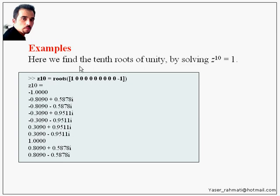Here we want to find the tenth roots of unity by solving z to the power of 10 equal 1. Type this code: z10 equal roots. This is the coefficient of this polynomial: [1 0 0 0 0 0 0 0 0 0 -1].